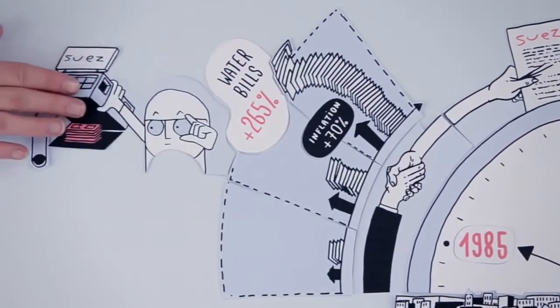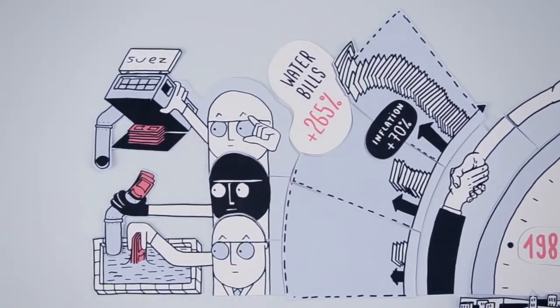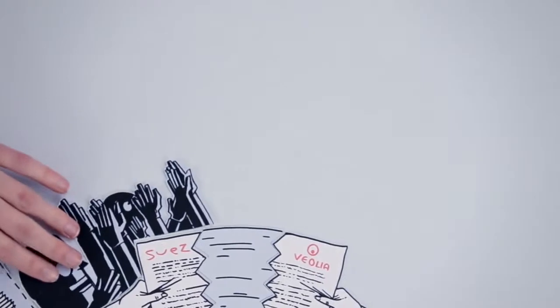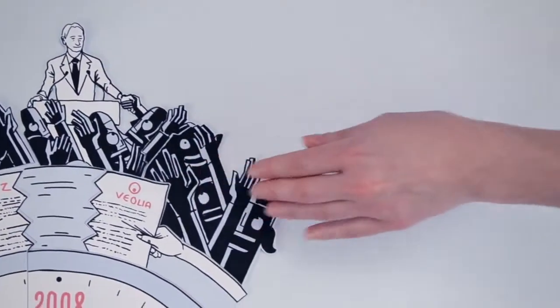Several audits had revealed the company's excessive profits and other dubious schemes, enough to turn influential city officials into champions of public water. During his re-election campaign, the mayor of Paris pledged to bring water back into public hands.